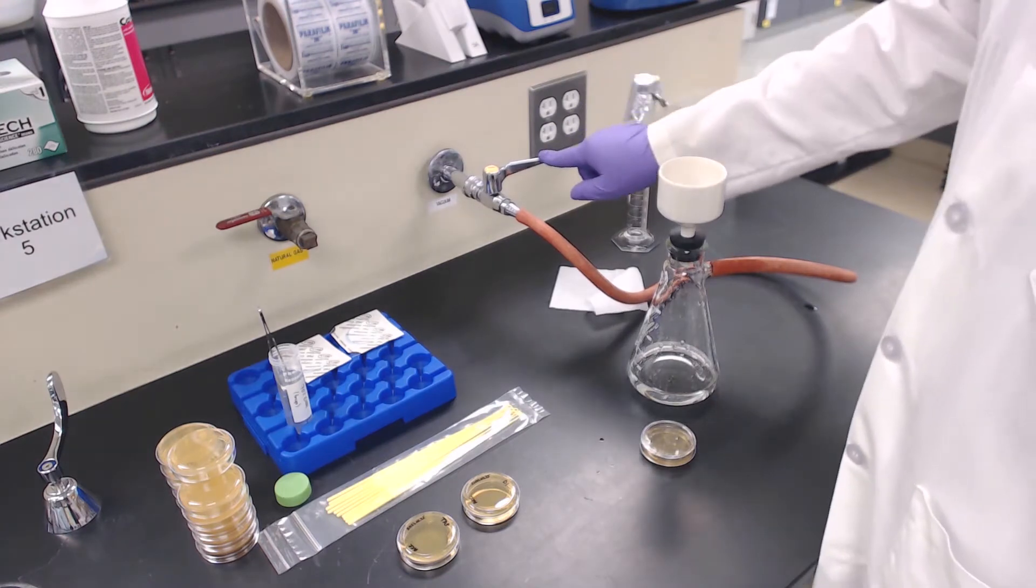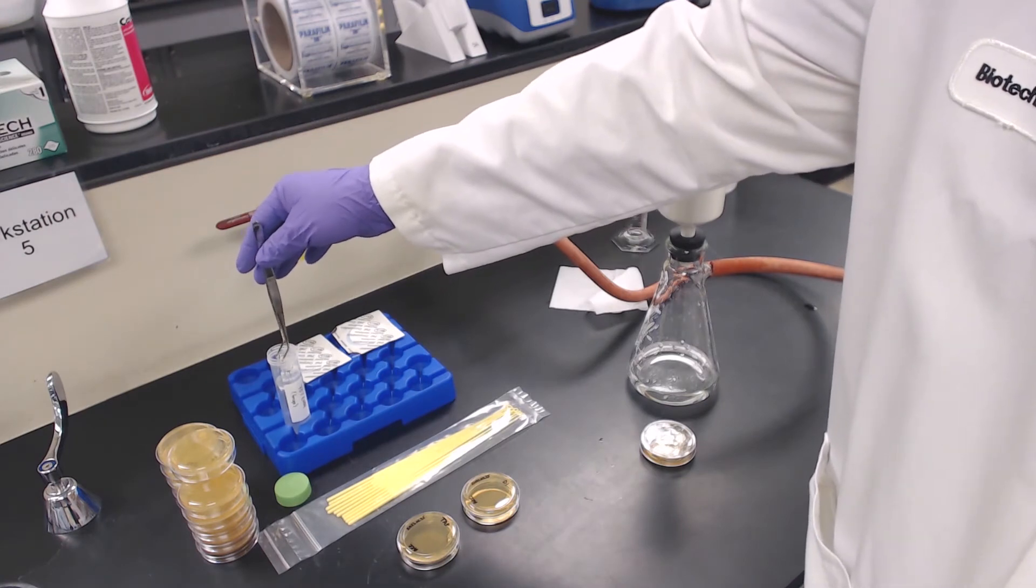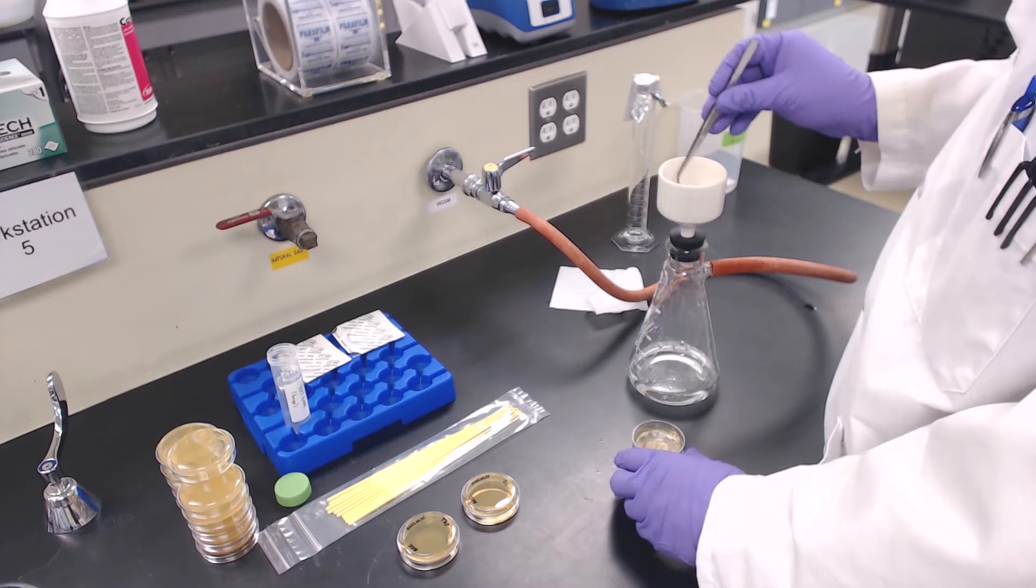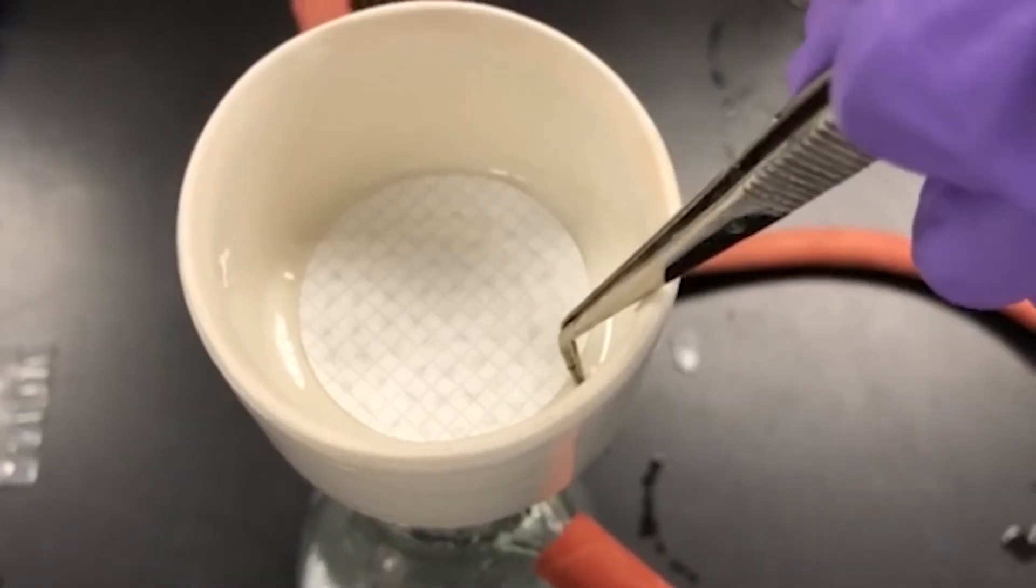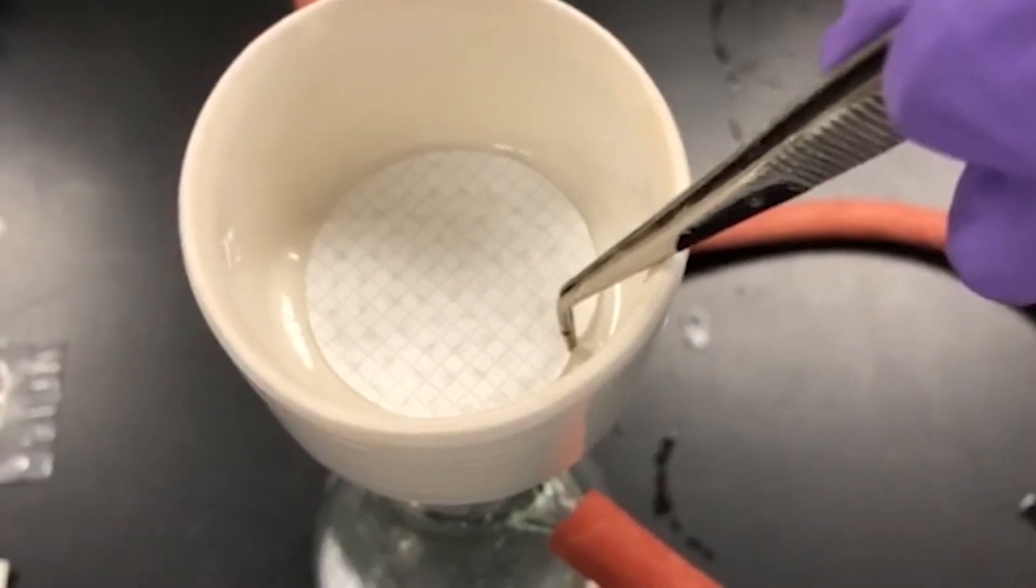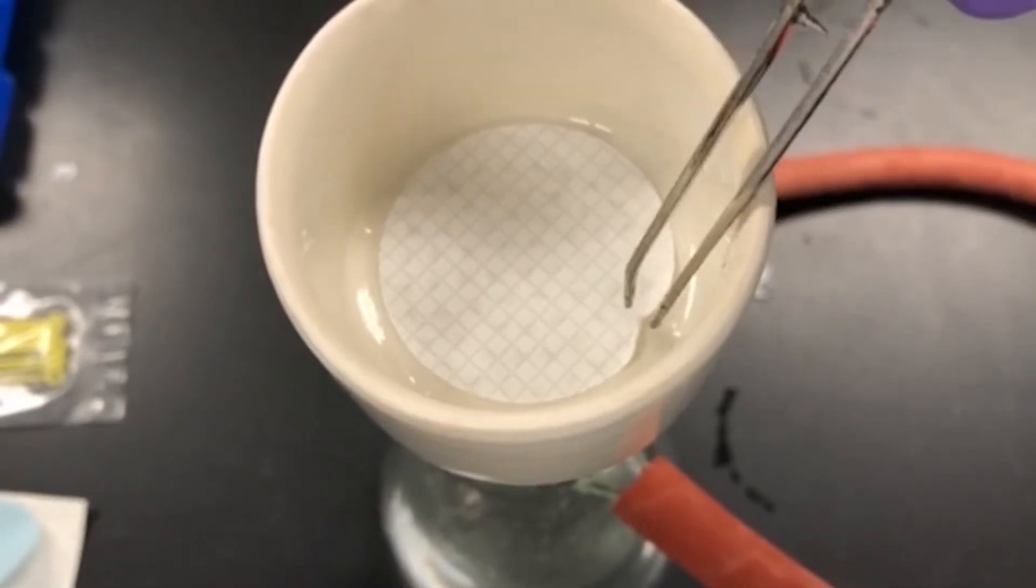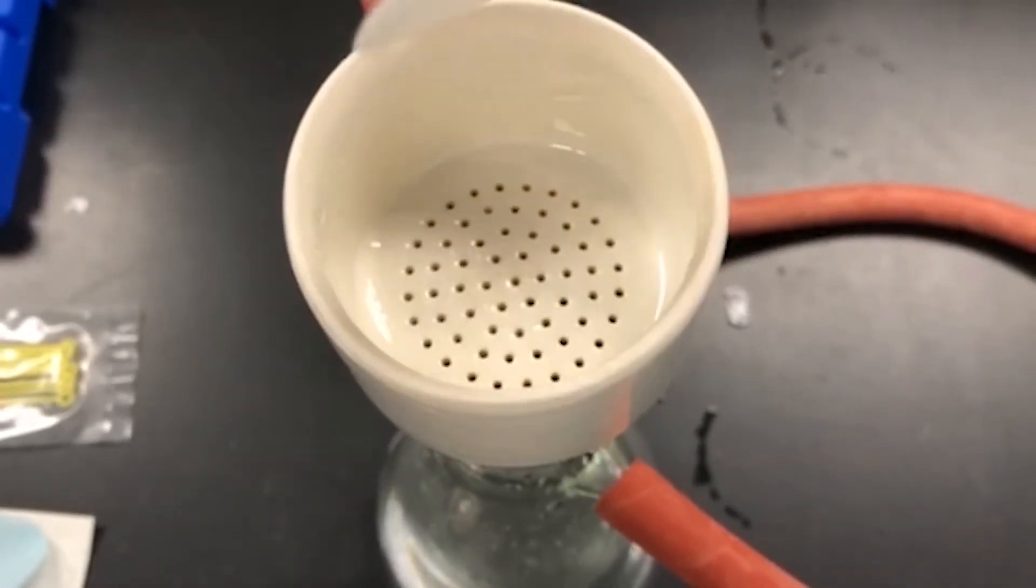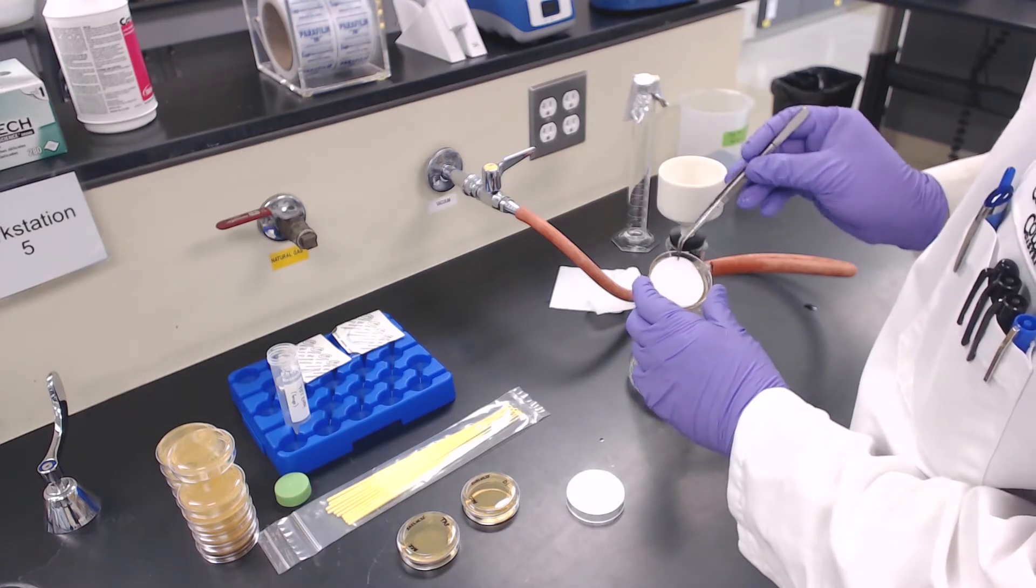Turn off the vacuum. With sterile forceps, retrieve the filter paper from the funnel. When removing the filter paper, slowly lift from one of the edges. This will prevent any tearing if there's still a vacuum behind the filter paper. Place the filter paper grid side up on the corresponding petri dish.